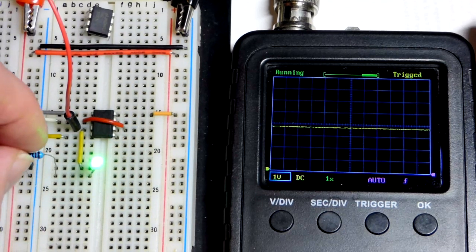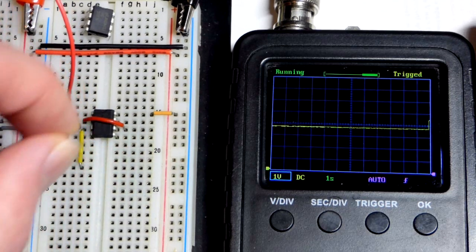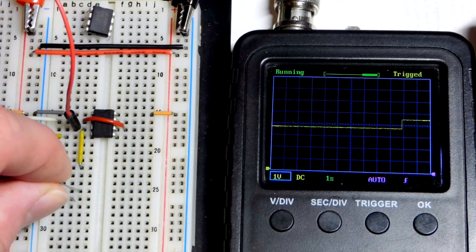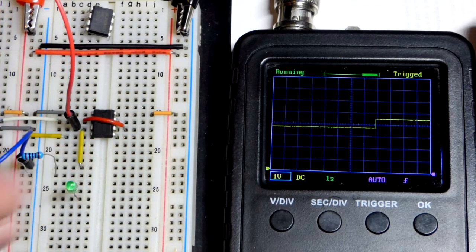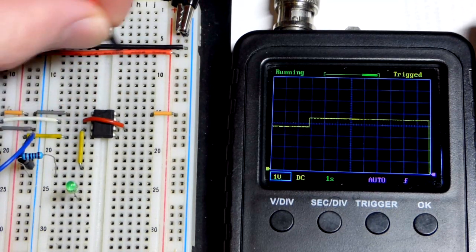That's a 1000 ohm resistor limiting current to ground, so maybe we got about 2 milliamps of current. Now if I remove the LED, you can see that the voltage goes up and it's falling a little bit shy of the 5 volt power supply.